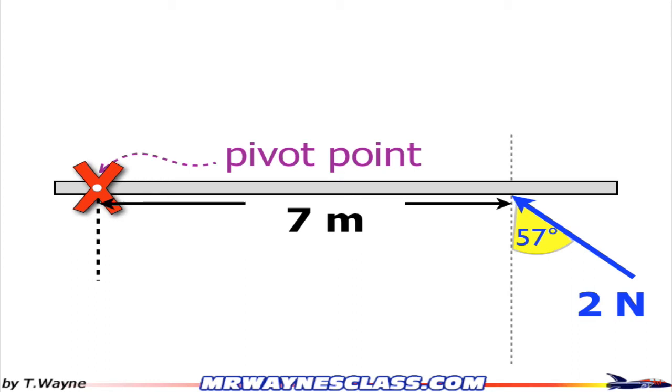This is the video solution to one of the torque example problems. I've got a force of 2 Newtons applied at an angle of 57 degrees with a vertical to the beam, and the pivot point is on the left and the force is applied 7 meters away from the pivot point.